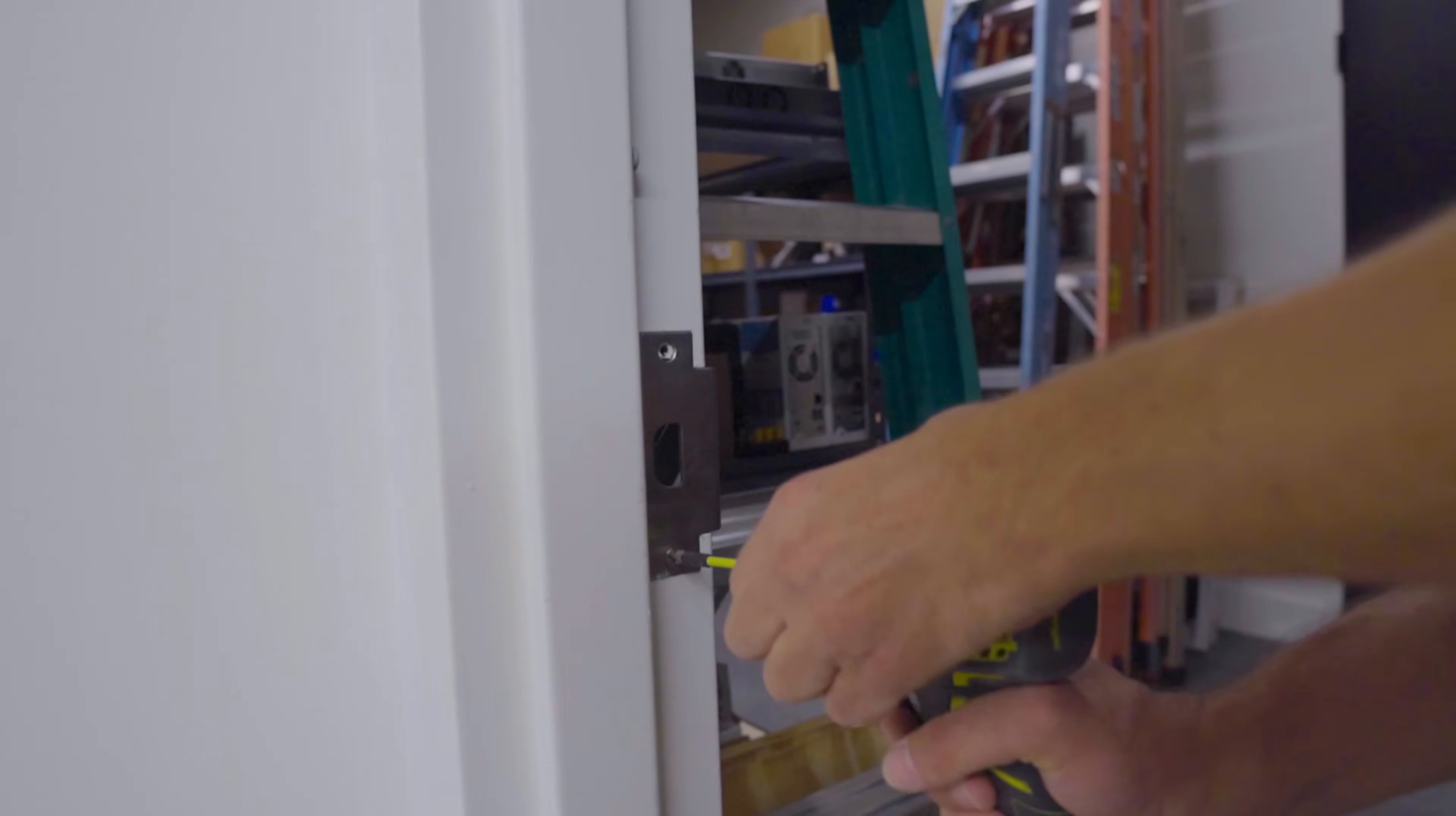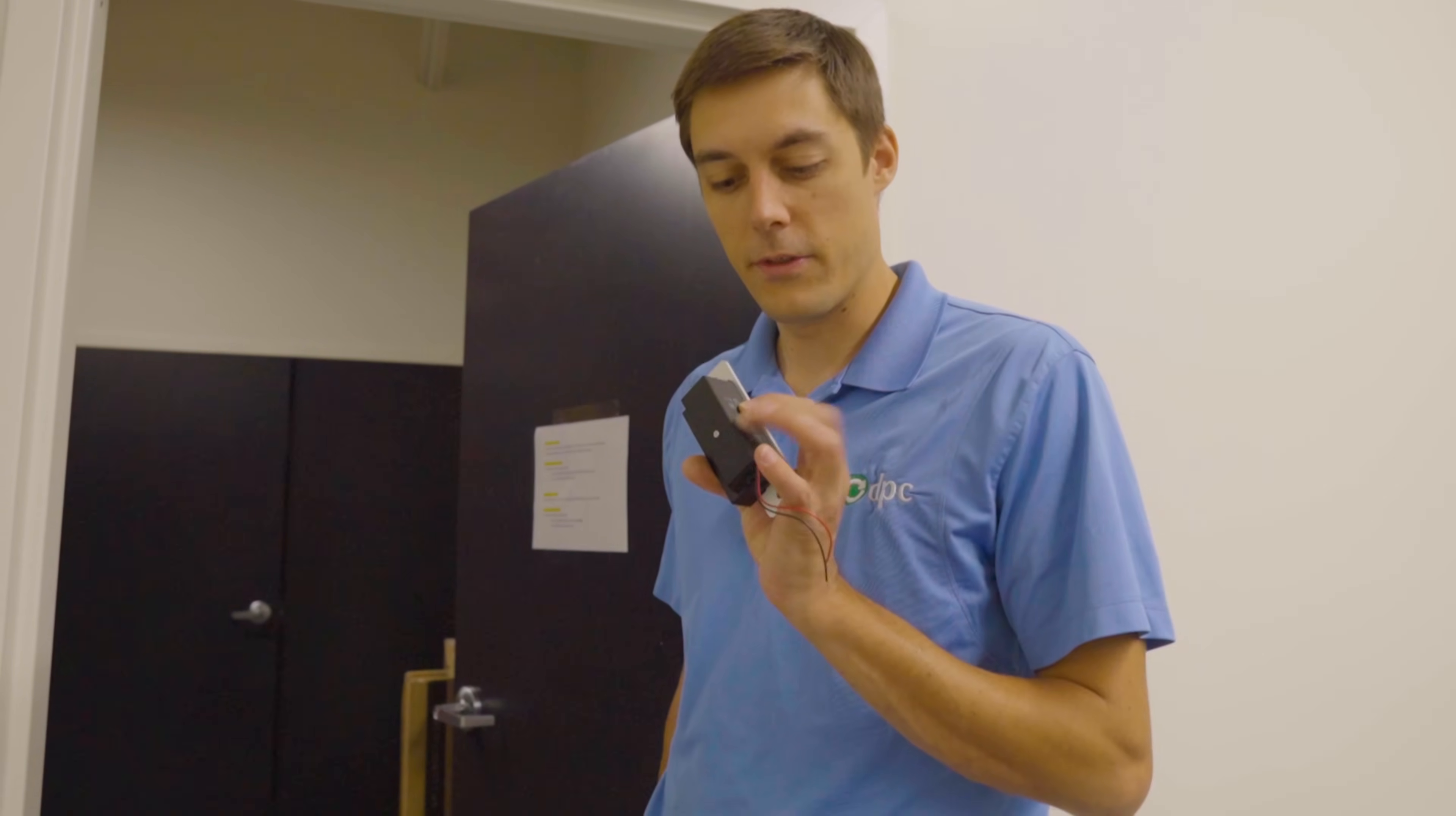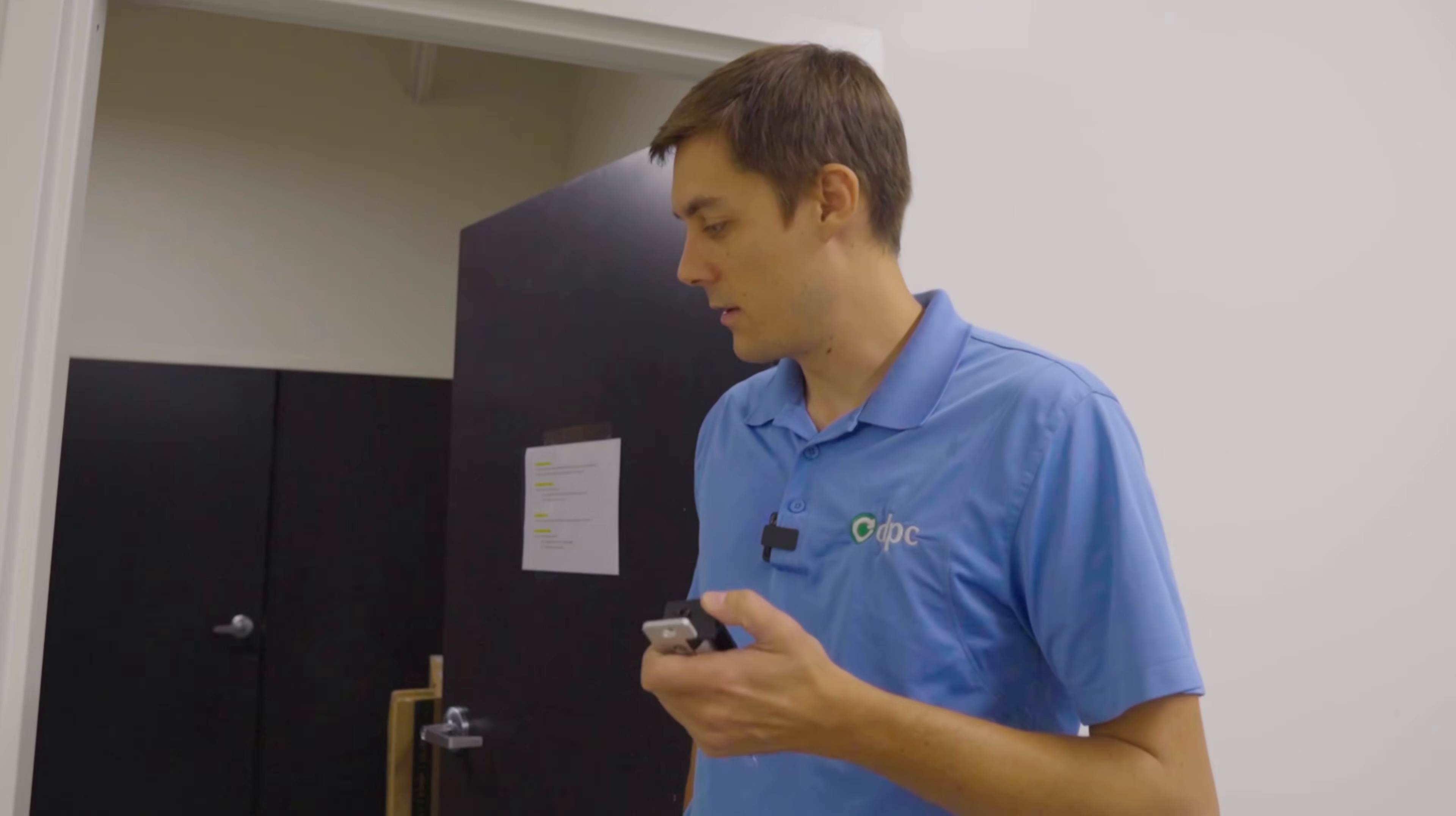First step I'm going to do is open up the door striker and take a look at the fittings of how this fits, because this is a little bit deeper and a little wider than my current door strike. I want to take that off, take a look behind it, and cut whatever I need to make sure this fits in the door.